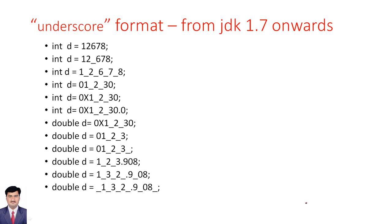From JDK 1.7 onwards, there was a new support to represent numbers called the underscore format. When given a large number like 12345678, it is very difficult to read at first glance. But when we have commas or separators in between, it is easier to read. Instead of commas, JDK provided underscore support. The underscore is only for readability purposes — it has no effect on the value stored in memory. It is just for the programmer's convenience.